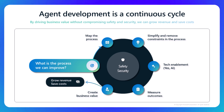How can you then measure that outcome and really drive a level of business value that means something for your organization? Not just 10 minutes here, 10 minutes there. Maybe it's cost savings, maybe it's allowing you to unlock new products. Really start to think about that cyclical process as you continue to improve your existing agents and unlock new ones as well.